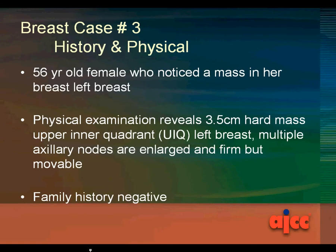The history and physical. This is a 56-year-old female who noticed a mass in her left breast. Physical exam revealed a 3.5-centimeter hard mass in the upper inner quadrant of the left breast. Multiple axillary nodes are enlarged and firm but movable. The family history is negative.